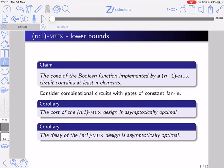We want to know whether this is asymptotically optimal or not. So we want to prove that the cost of the design that we just saw is asymptotically optimal and that its delay is also asymptotically optimal. Namely, you cannot do better. How do we prove this? We prove that the cone of the Boolean function implemented by the N to 1 MUX contains at least N elements, all the data inputs, and therefore since the cone is so big, the cost has to be linear and the delay has to be logarithmic in any implementation. So all we need to do is prove this claim.